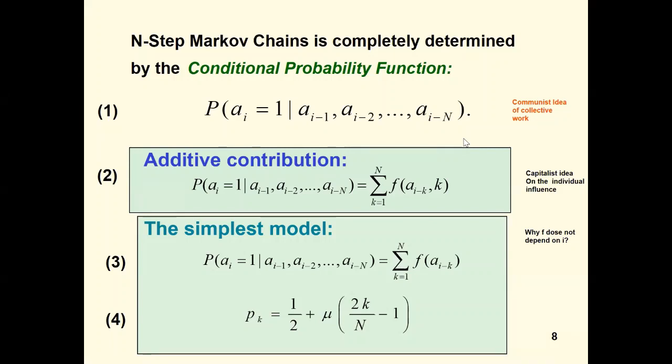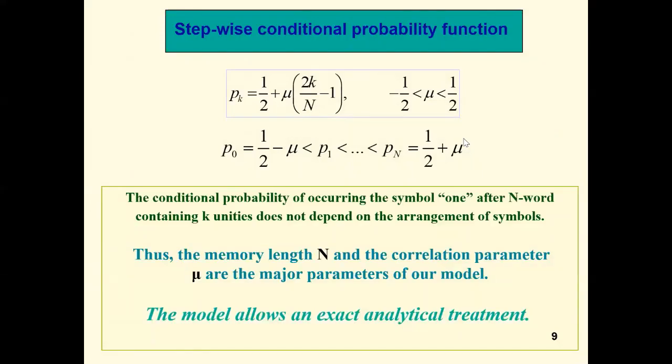A little bit later, now we consider its following simplification. We suppose that the conditional probability function p of the symbol one occurring depends on the number of unities in the previous word and not depends on the arrangement in the word. Under the term word, I will understand an arbitrary subsequence of symbols zero and one. So all n previous elements give the equal contribution into probability of the next element occurring. The function p is the probability if the parameter mu belongs to the interval from minus one-half to one-half. The second line explains the very important property of the model. For positive mu, the more unities in the previous word, the higher probability of the next word unity we have. In this model, the conditional probability is determined by two parameters only: n and mu.